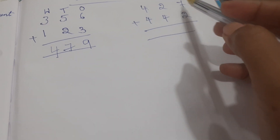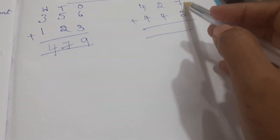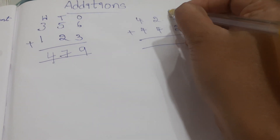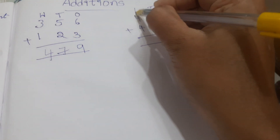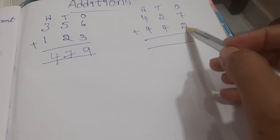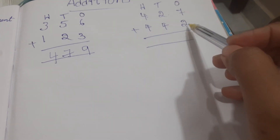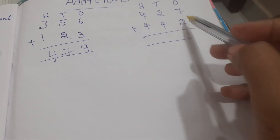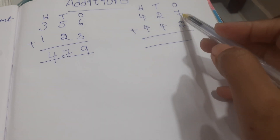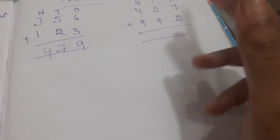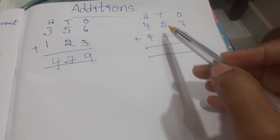Now you have to add 427 with 442. In the ones column, the two numbers are seven and two. Seven is bigger than two, so you keep the bigger number in mind and open fingers for the smaller number. Seven in mind, two fingers open — seven, eight, nine.